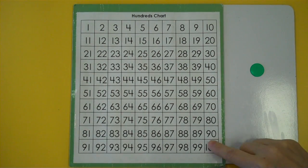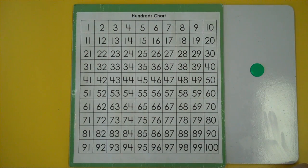If you take a look at the video description you should see a PDF that you could print off for a hundreds chart. Subtraction, remember, is takeaway or less than. It's getting smaller. Our numbers are getting smaller.